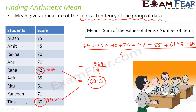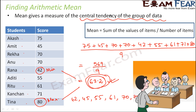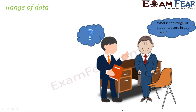When you look at the arithmetic mean, it is 63.2, which lies somewhere in between the data — the minimum value starts from 42 and the maximum value goes up to 80. If you arrange the scores in increasing order: 42, 45, 55, 61, 70, 70, 71 and so on, you can see that 63.2 lies in the central region. Therefore, the arithmetic mean gives a measure of central tendency of a group of data.